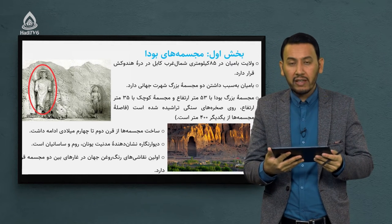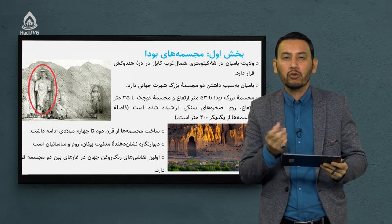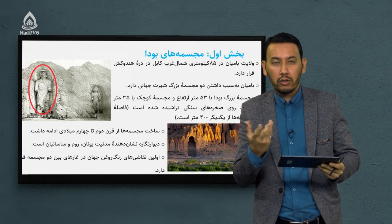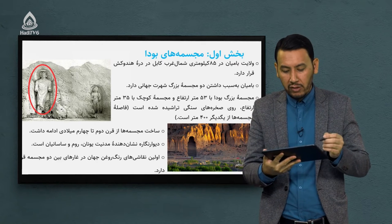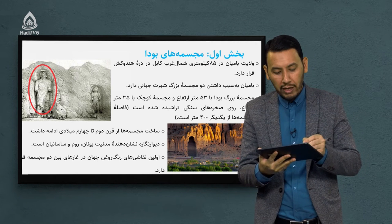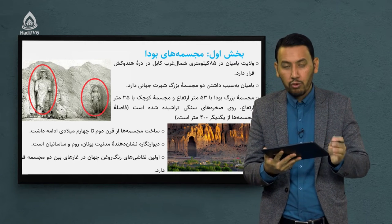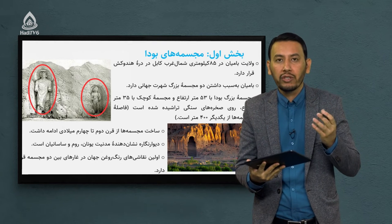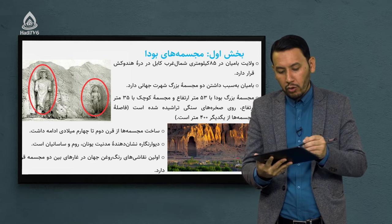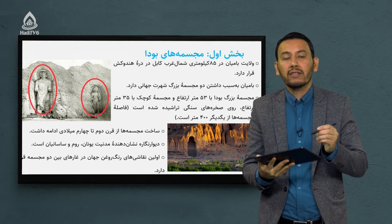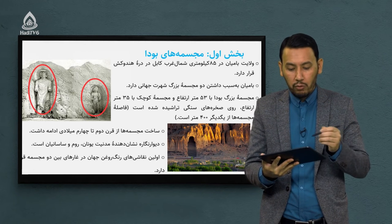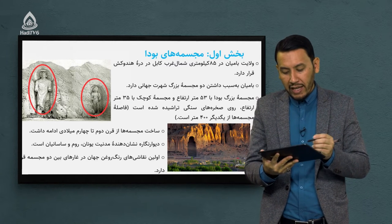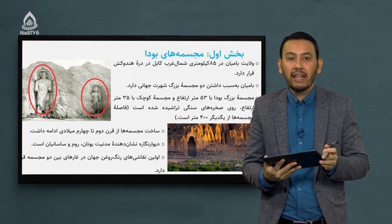مجسمه بزرگ را تحت عنوان سلسال می‌خوانند. سلسال یک کلمه است به معنای گل خوش. مجسمه کوچک‌تر تحت عنوان شه‌مامه یاد می‌شود که معنایش می‌شود شاه‌بانو، یعنی بانوی شاهان. این دو مجسمه در کنار همدیگر قرار دارند؛ مجسمه بزرگ یک مجسمه مرد است و مجسمه کوچک یک مجسمه زن، و نسبت این دو زن و شوهری است.